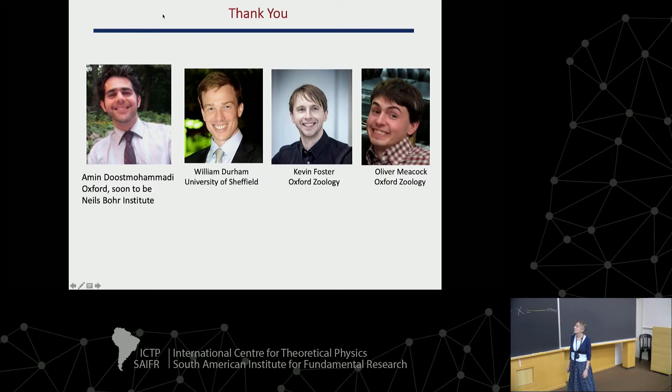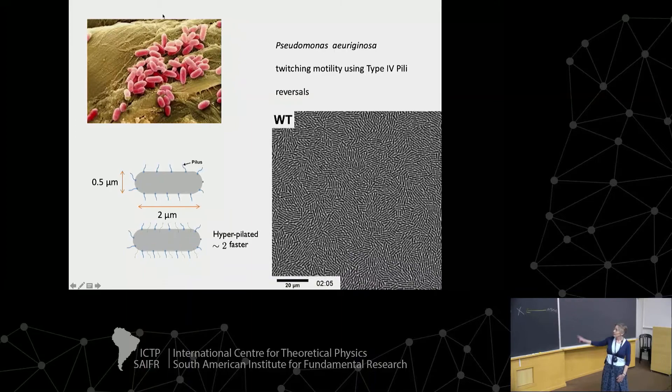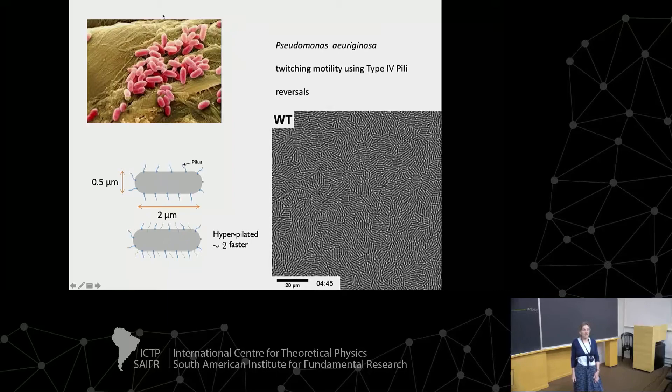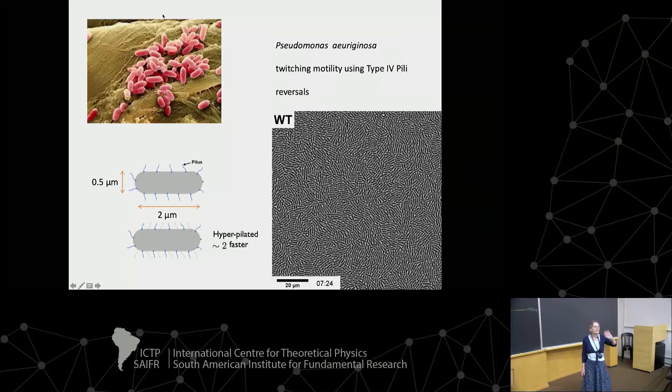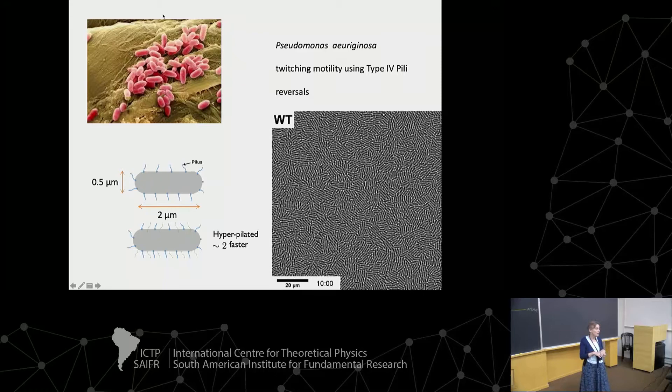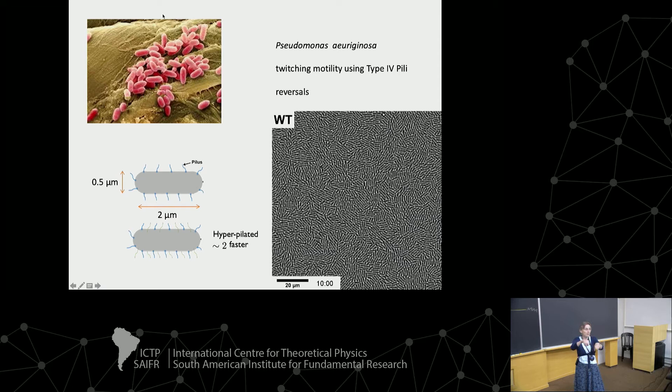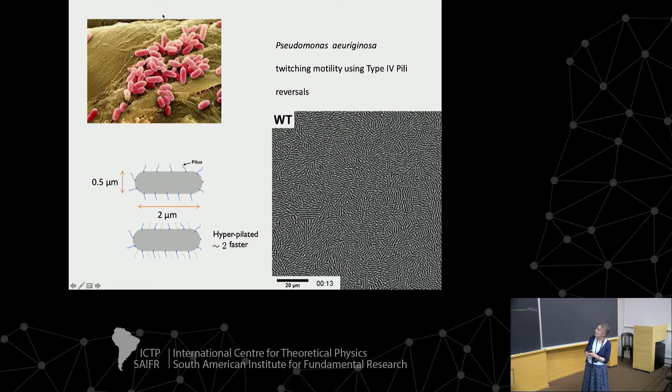Mac Durham and Kevin Foster have been supervising the experiments and explaining the biology to me. So we're thinking about bacteria now — twitching bacteria. These are different from what we've talked about before: up to now we've had things which swim through a fluid, but these guys crawl on the surface. They have pili — tiny feelers — which pull them across the surface, and they twitch, meaning they tend to go forwards and backwards and change direction every now and then.